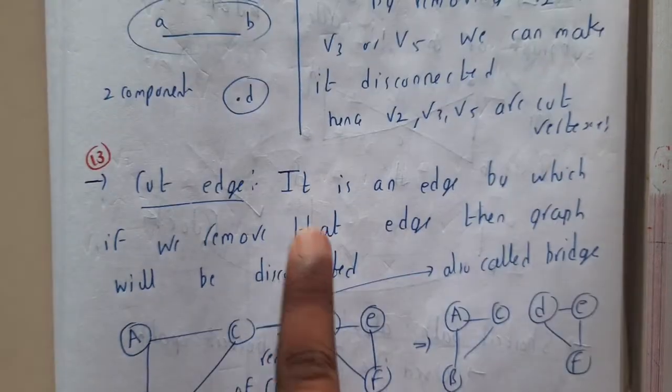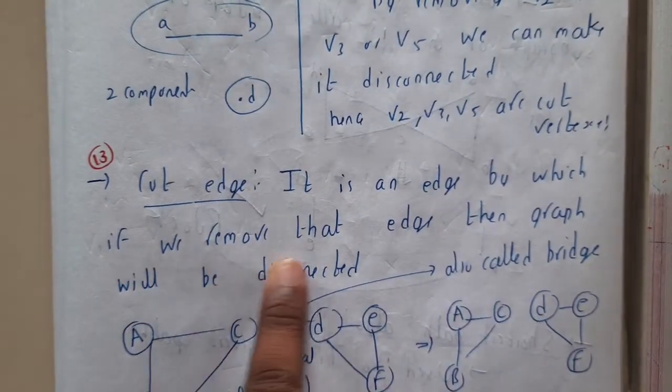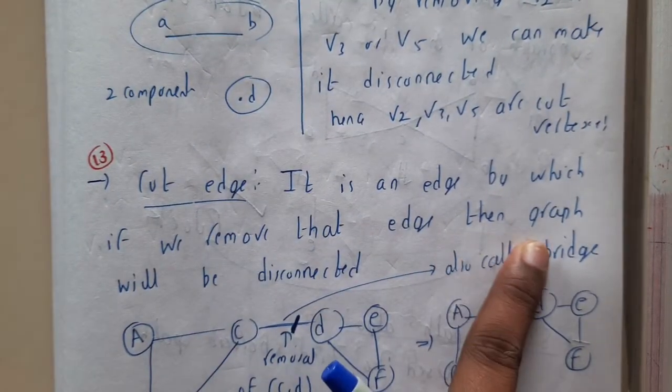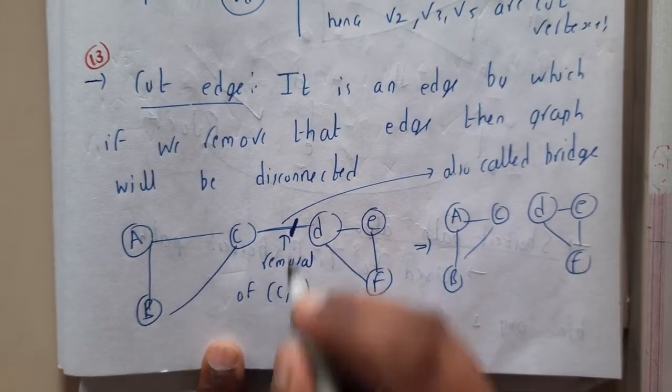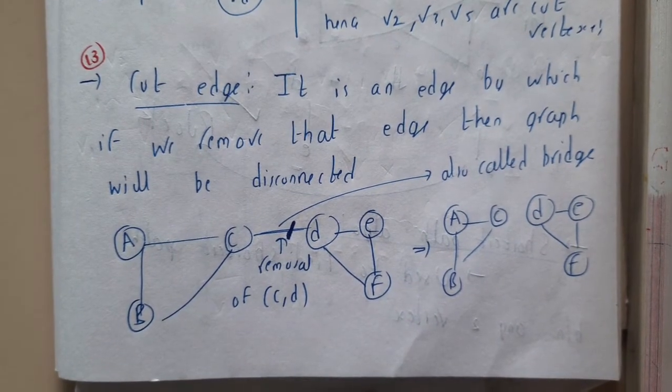This is nothing but a cut edge. It is an edge by which if we remove that edge, then the graph will be disconnected. So we disconnected the graph. This edge is also called a bridge. In some examinations they will be asking in two marks, 'Define a bridge.'